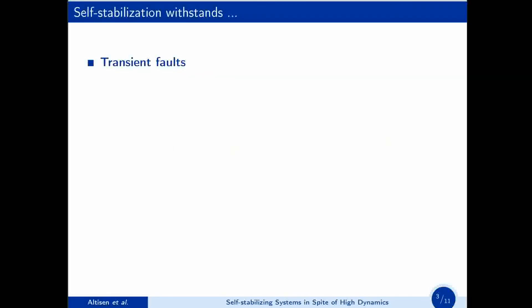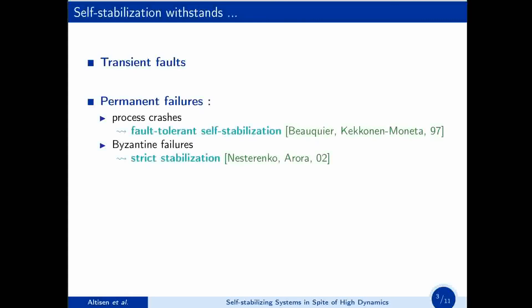Like I said before, self-stabilization allows to withstand transient faults. Those failures are rare and non-permanent. But one can also withstand other types of failures with self-stabilization. For example, permanent failures, such as process crashes, with fault-tolerant self-stabilization, or Byzantine failures, with strict stabilization.